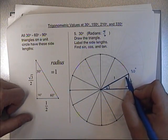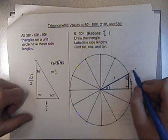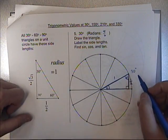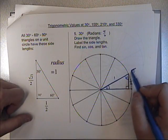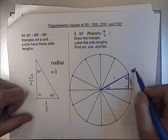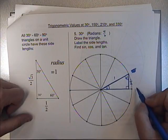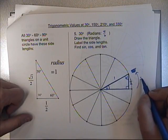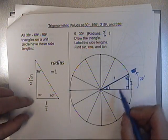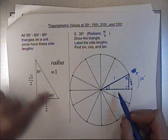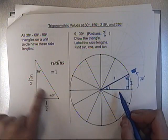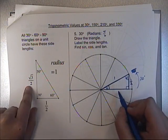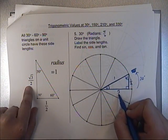And then you can see the other corner is going to be 60 degrees. And the opposite from that — here's 60 degrees — the opposite side from that is the square root of 3 over 2.